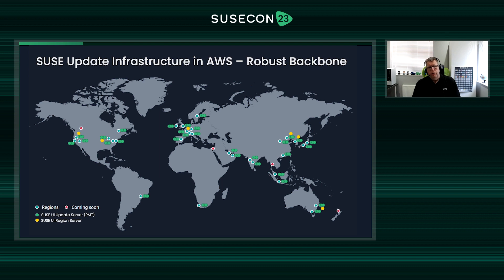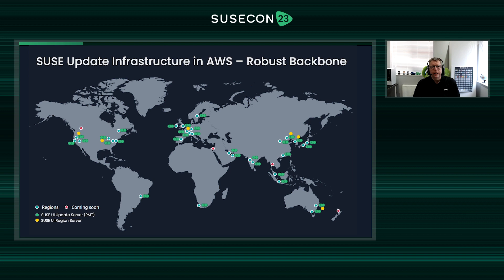Another benefit is that this solution can grow alongside AWS. As new regions open, SUSE can simply deploy another set of update servers into that region to ensure customers can patch efficiently. As of this month, there are around 100 or so different servers forming this service in AWS.